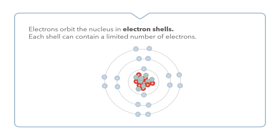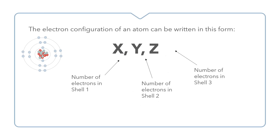Here we have an atom, and the central region is called the nucleus. Electrons orbit the nucleus in electron shells — we have one shell, two shells, and three shells. Each shell can contain a different number of electrons: the first shell can hold up to two electrons, and the second and third shells both hold up to eight electrons each. We can show the electron configuration of an atom by writing the number of electrons in each shell, separated by commas.